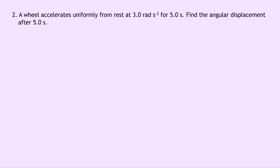Question 2 says that a wheel accelerates uniformly from rest at 3.0 radians per second squared for 5.0 seconds. Find the angular displacement after 5.0 seconds. So we're asked to find theta. The initial angular velocity ω₀ is 0 radians per second. We don't know the final angular velocity. The angular acceleration is 3.0 radians per second squared. And lastly, the time is 5.0 seconds. Putting a star next to the angular displacement theta because that's the one we're trying to find.